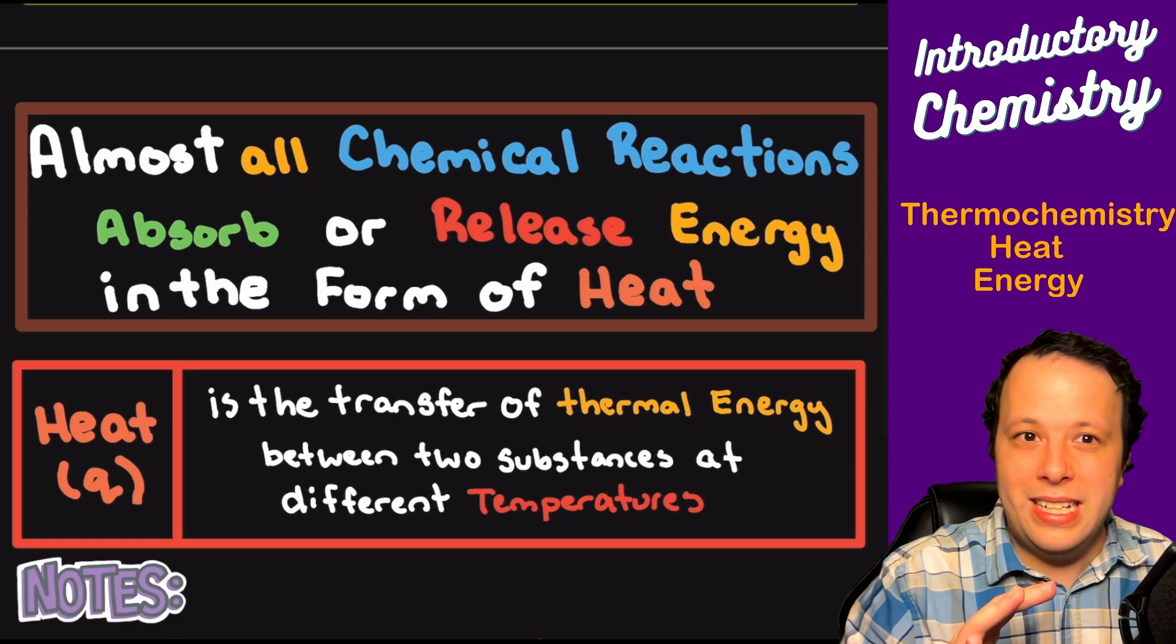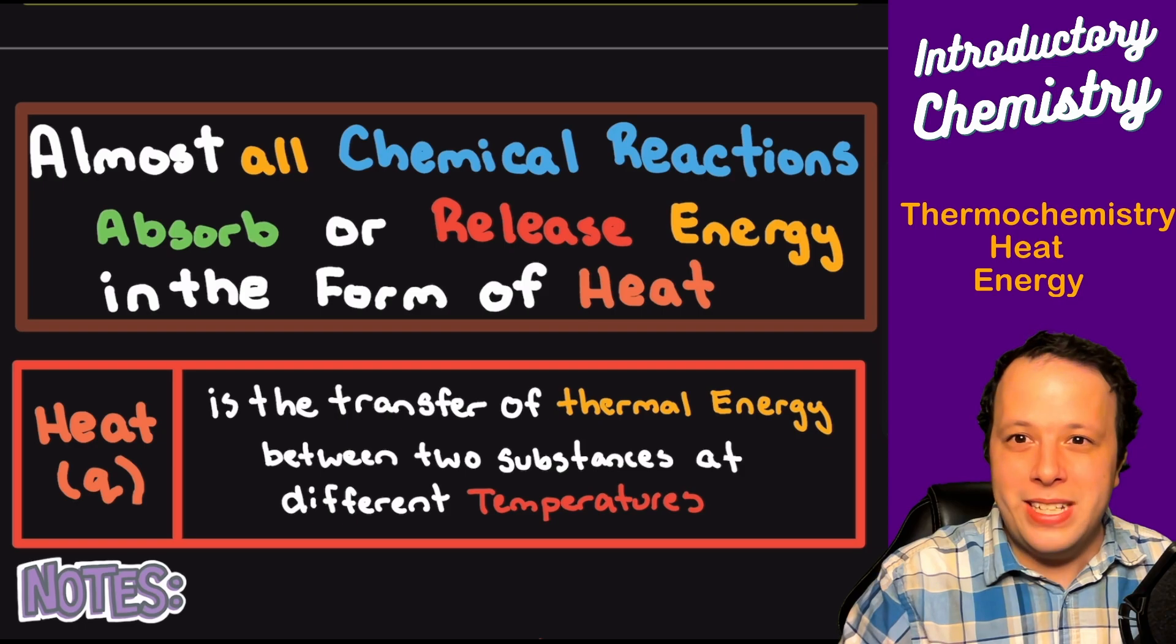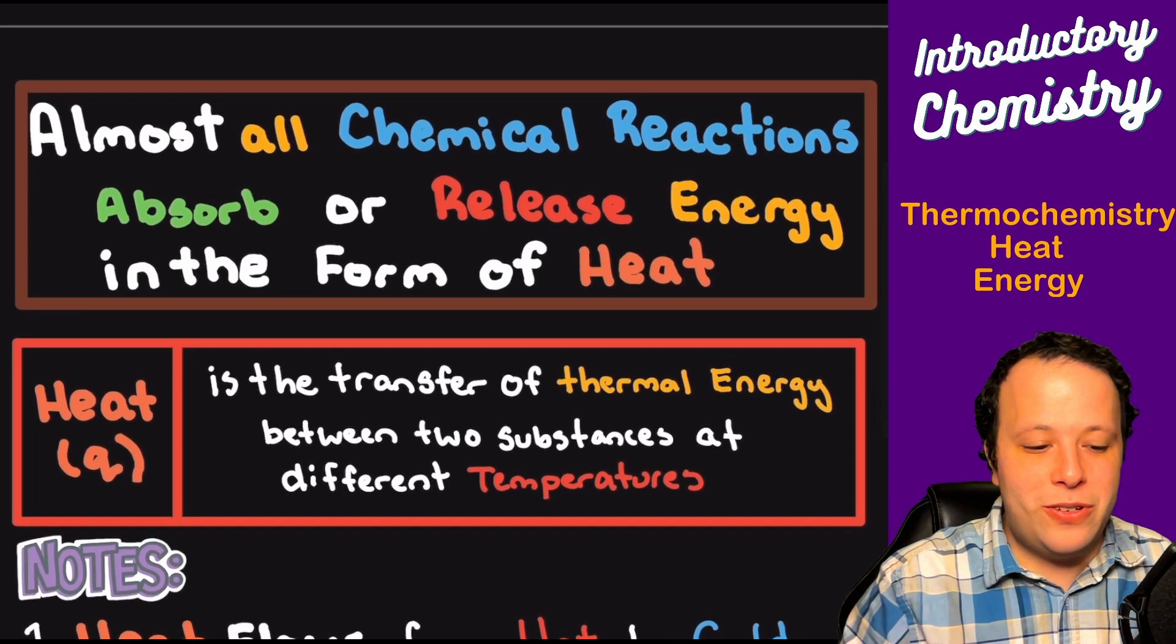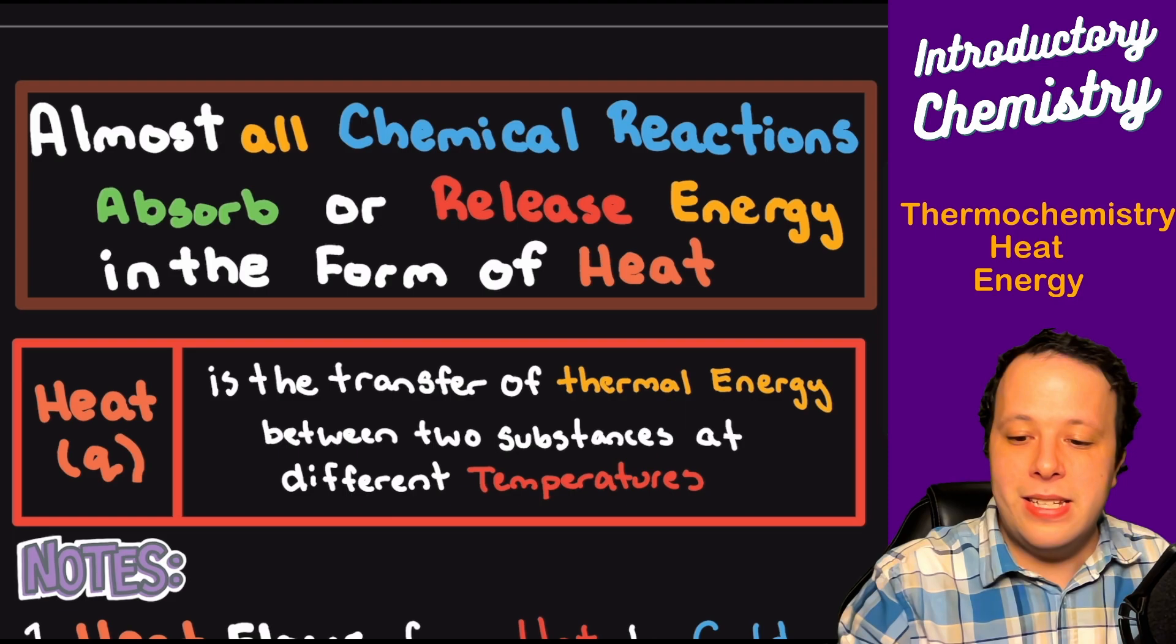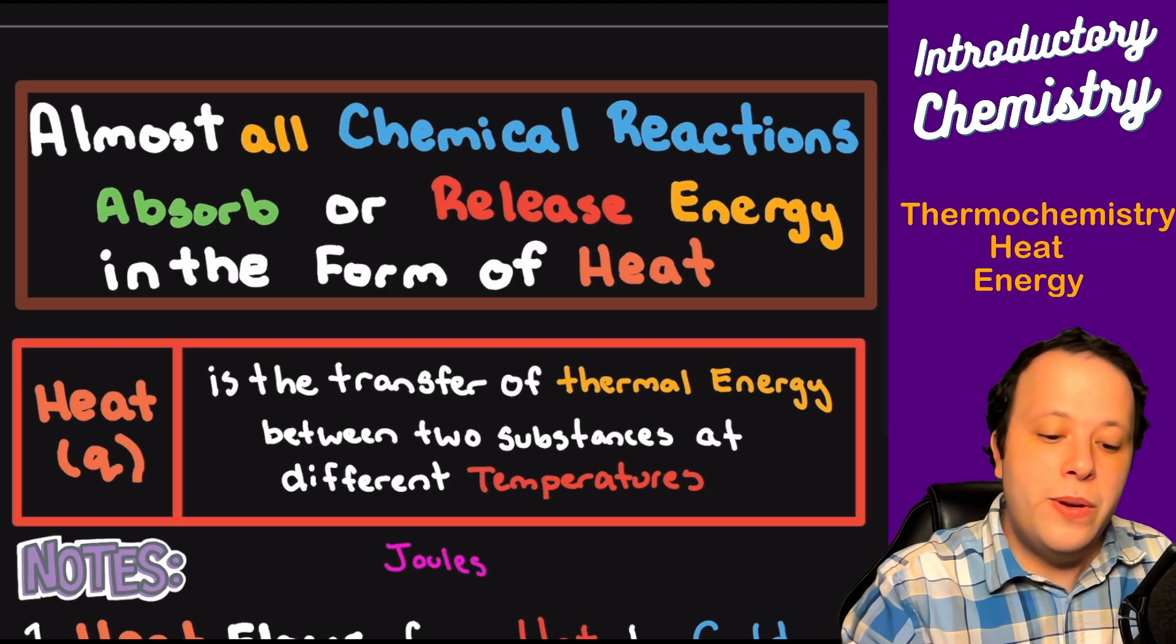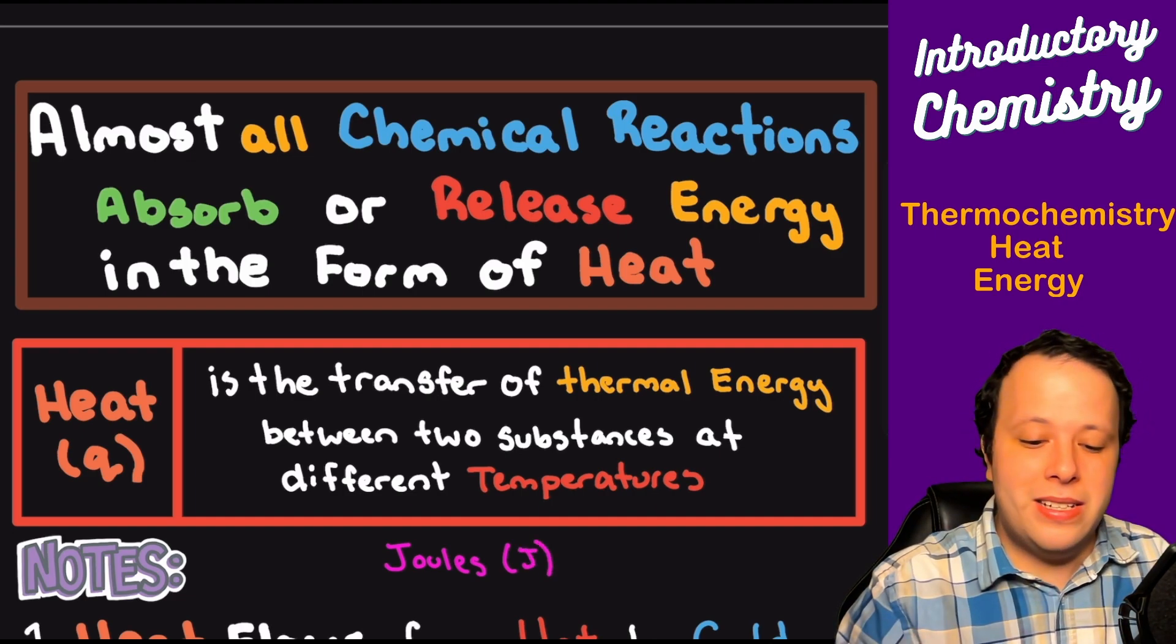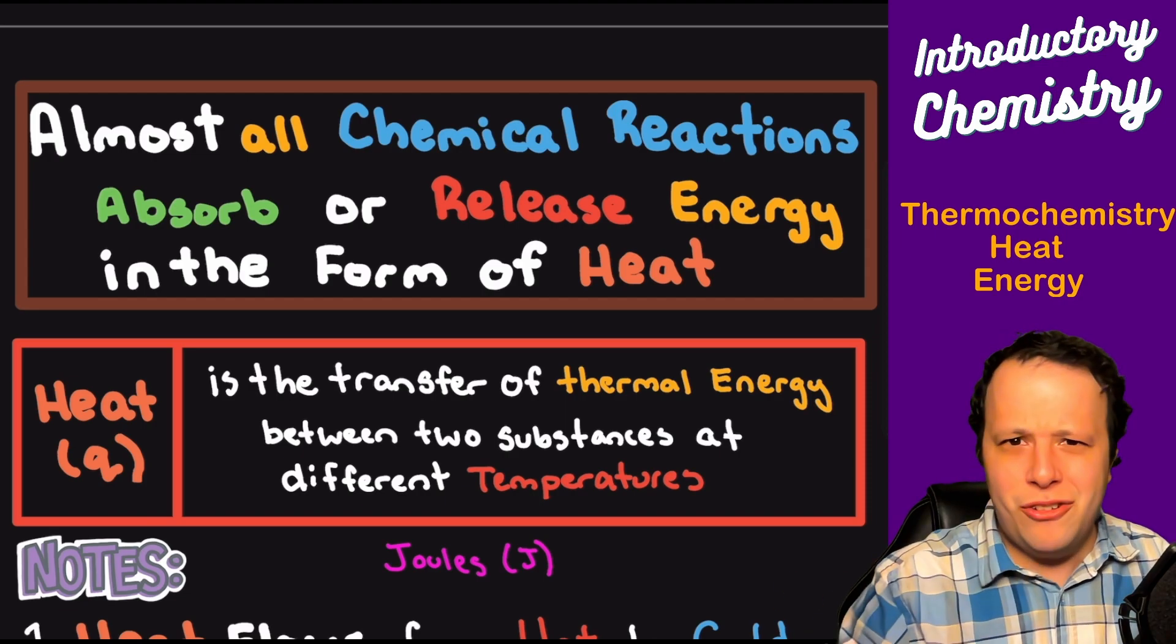Almost all chemical reactions either absorb or release heat. When they absorb or release energy, it's in the form of heat. One thing we're constantly trying to measure in chemistry is this transfer of energy between two substances at different temperatures. We represent this with the letter Q to show heat, and the units are in joules—J-O-U-L-S, with letter J. This is an SI unit, so we can manipulate it using prefixes like millijoules.